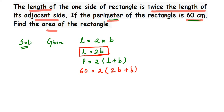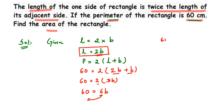We need to find the value of B. So: 60 = 2 × (2B + B) = 2 × 3B = 6B. To find B, I transpose 6 to the other side — multiplication becomes division. So B = 60 ÷ 6 = 10. Therefore, B = 10 centimeters. The breadth is 10 centimeters.